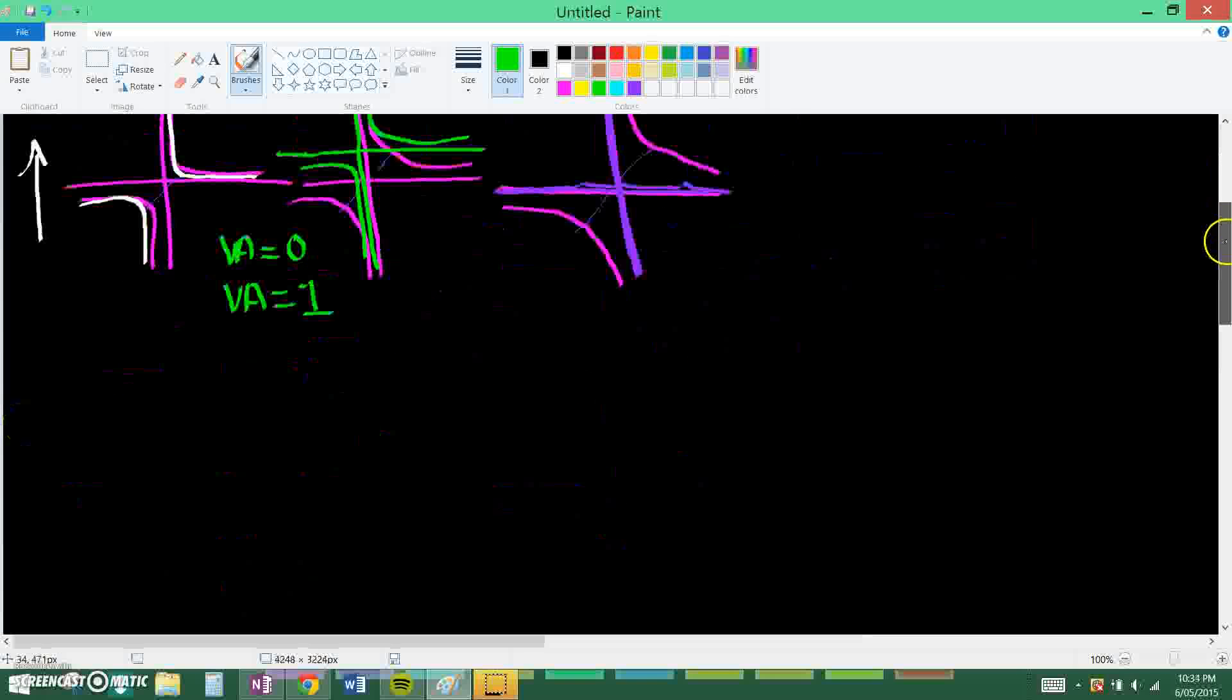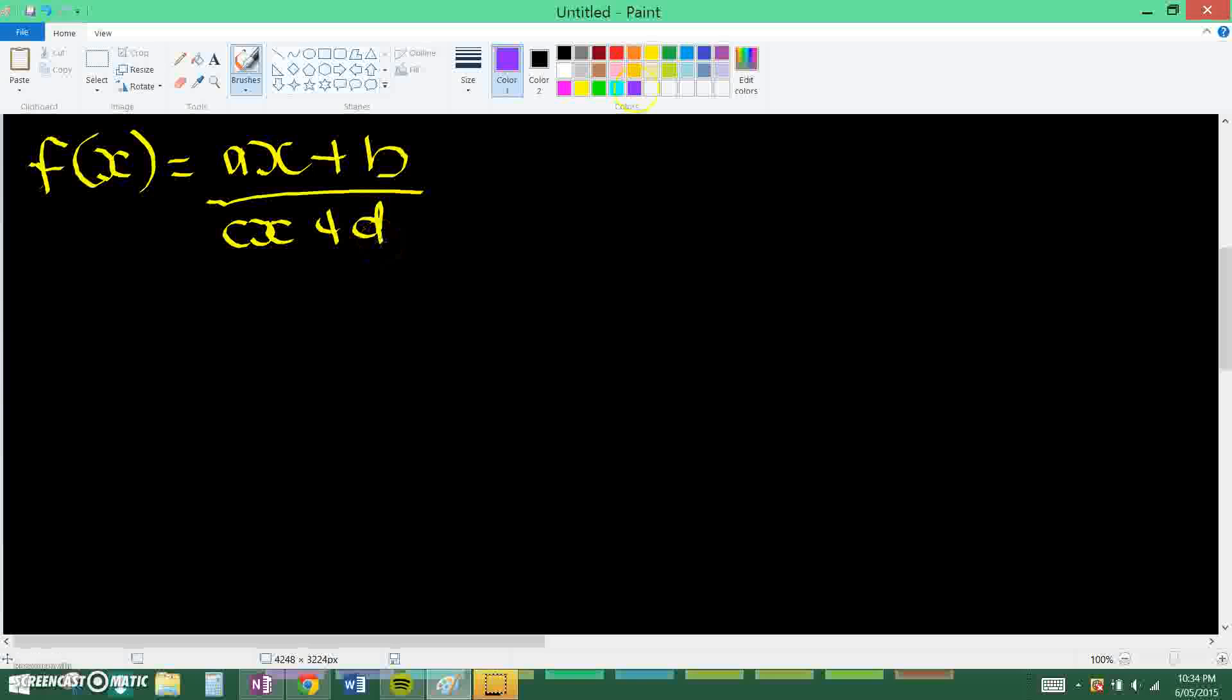Now just keep that in mind when we go and do the following rational functions. So basically the equation for the rational functions is f(x) equals ax plus b over cx plus d. It looks complicated but it's just a, b, c, d, it's really not that hard. So basically I'll give you an example.